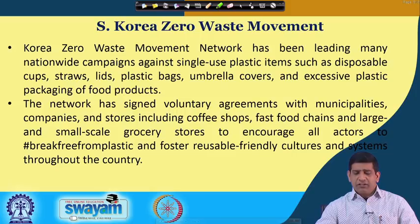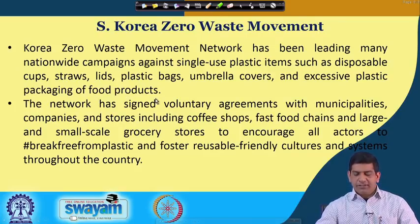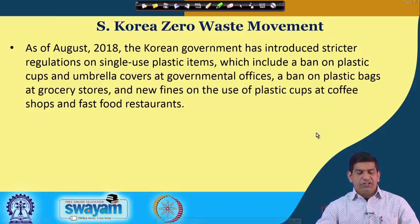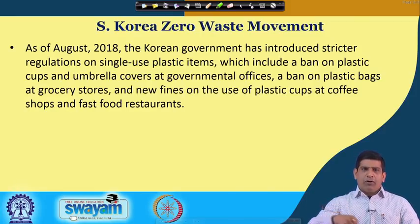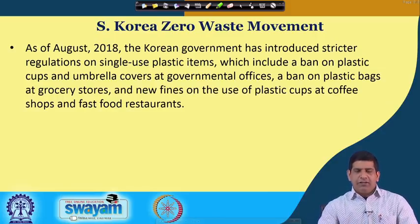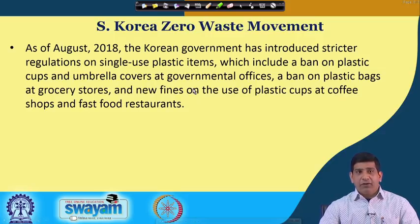In South Korea, the Korea Zero Waste Movement Network led a nationwide campaign against single-use plastic, disposable cups, straws, and similar items. There are a lot of voluntary agreements with larger and smaller-scale grocery stores. In August 2018, the Korean government introduced stricter regulations on single-use plastic, including a ban on plastic cups and umbrella covers at government offices. Umbrella covers are thin plastic bags provided at government offices in many countries so that a wet umbrella does not drip inside the corridor. They have banned that, though this may require some different solution to avoid the water drip problem.